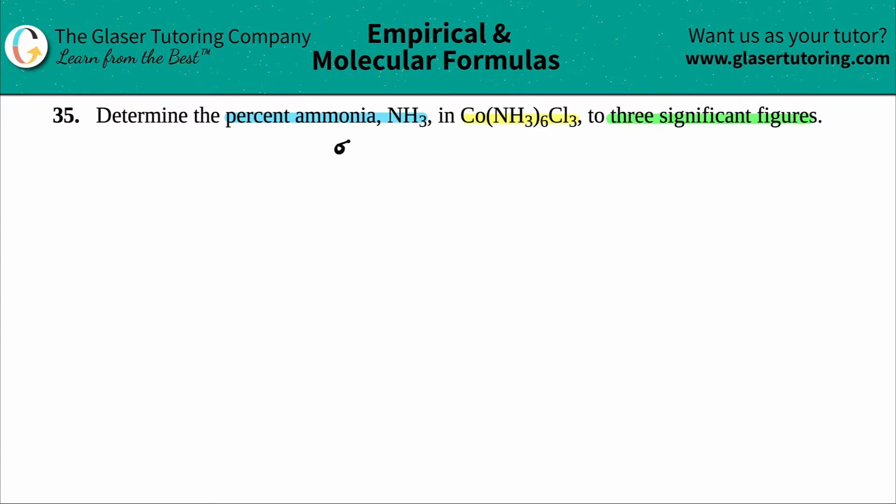So basically what we're doing is we need to find the percent ammonia, which is NH3, and we need to find the amount of ammonia. So amount of NH3, that's the part. And we're going to be dividing that by the total amount of the entire compound, which is Co(NH3)6Cl3. And then just like with any percent, we always just multiply by 100.